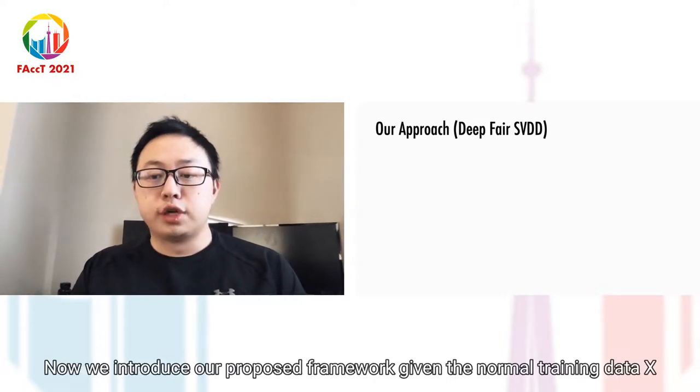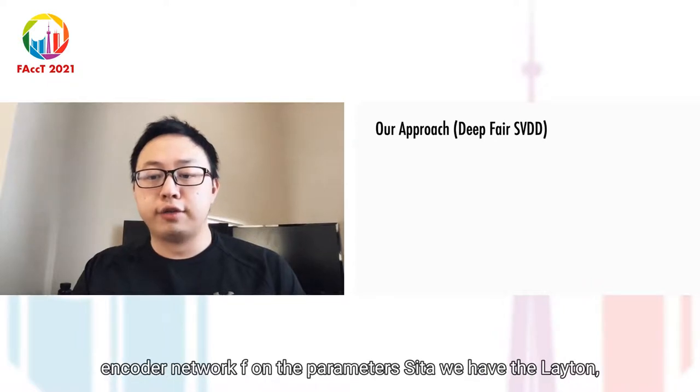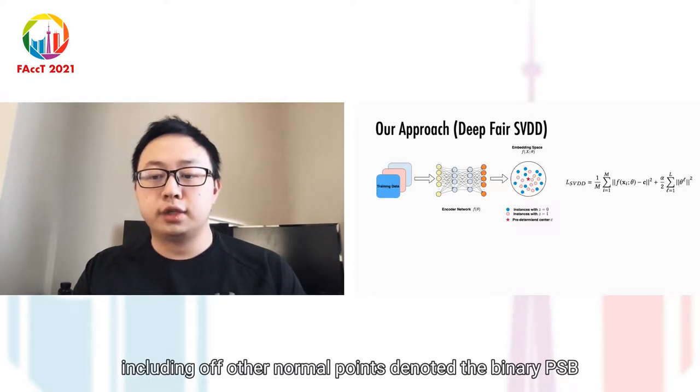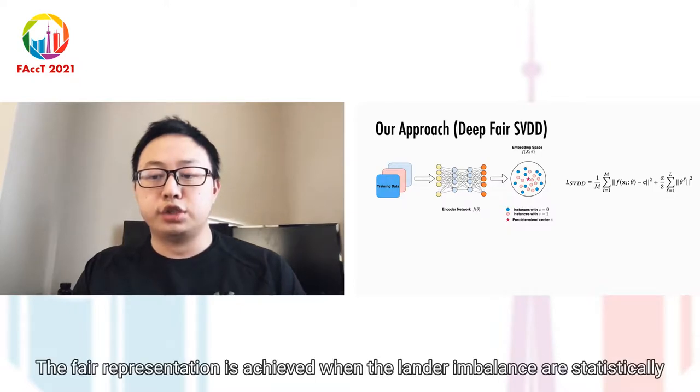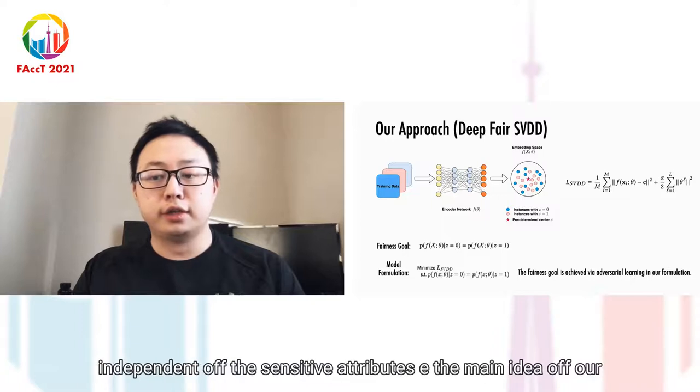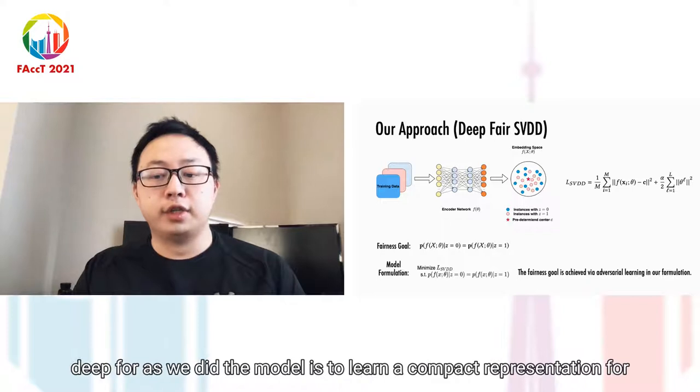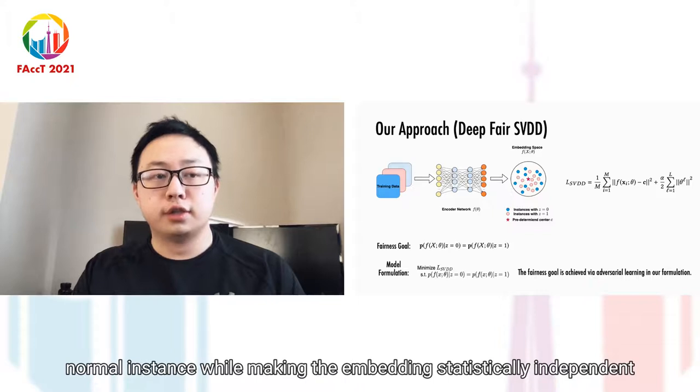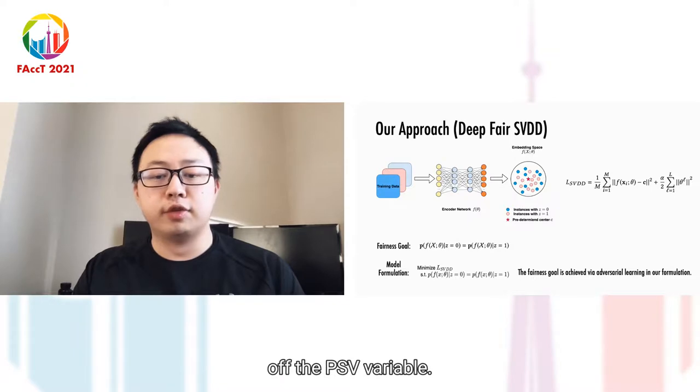Now we introduce our proposed framework. Given the normal training data X, encoder network F, and parameters theta, we have the latent encoding of all normal points. Denoting binary PSV as Z, the fair representation is achieved when the learned embeddings are statistically independent of the sensitive attribute Z. The main idea of our DeepFair SVDD model is to learn a compact representation for normal instances while making the embeddings statistically independent of the PSV variable.